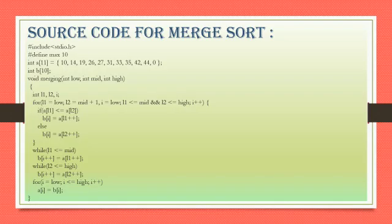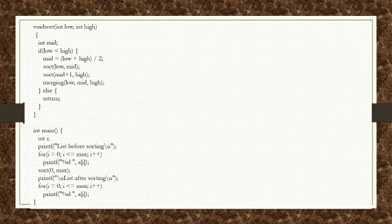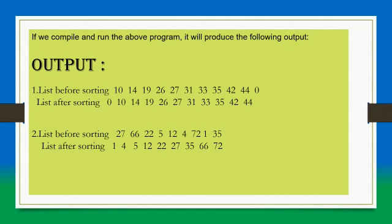We can copy array b elements back into the original array using a for loop. By writing this code, when we execute it, the output shows the list before sorting with the entered elements, and after executing, the list after sorting shows the elements in sorted order: 10, 14, 19, and so on up to 42 and 44.